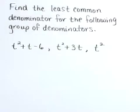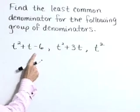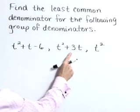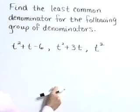Find the least common denominator for the following group of denominators: t squared plus t minus 6, t squared plus 3t, and t squared.